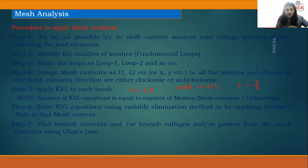Now we will solve KVL equations using variable elimination methods or by applying Cramer's rule to solve the mesh currents and finding out the value of it. Now find branch currents or branch voltage and power from the mesh currents using Ohm's law. So whenever we will obtain the value of current, through current we can take out the power like P is equals to V into I and energy also which is integration of P with respect to time.